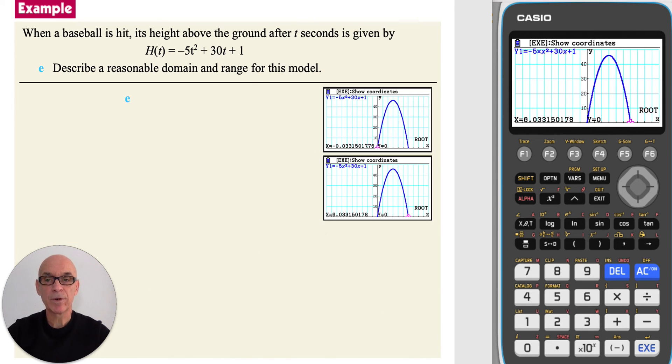In part E, we're asked to describe a reasonable domain and range for this model. So for the domain, which is the time variable, as the time cannot be negative, t will have to be greater than or equal to 0.